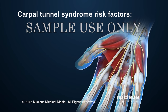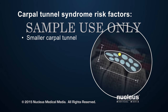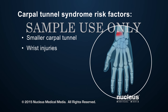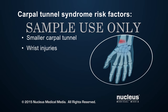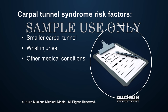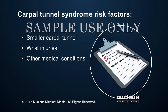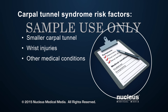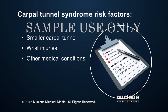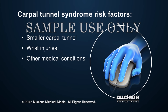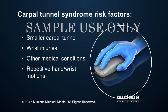Risk factors for carpal tunnel syndrome include a smaller carpal tunnel from being female or from genes passed down from parents, wrist injuries, other medical conditions that cause inflammation, fluid buildup, or nerve damage such as diabetes, pregnancy, rheumatoid arthritis, obesity, and hypothyroidism, and repetitive hand or wrist motions.